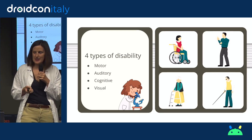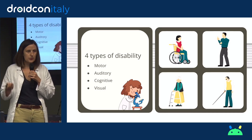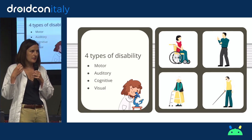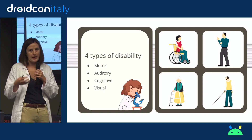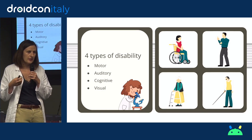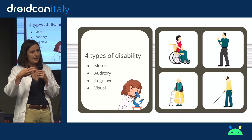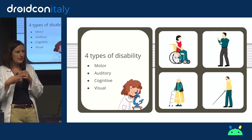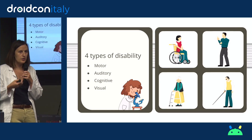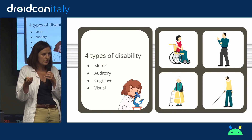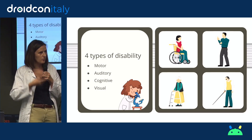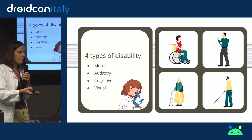The last category is visual impairment. Today we are going to focus on this last category because we think as developers it's a category where we can have the biggest impact. When you develop something to make it accessible for a screen reader, for someone who is blind, the API used is the same API used by tools for people with motor disability. For example, switch access on Android uses the same API as TalkBack. So if we work on visual disability, we will have an impact on motor disability.